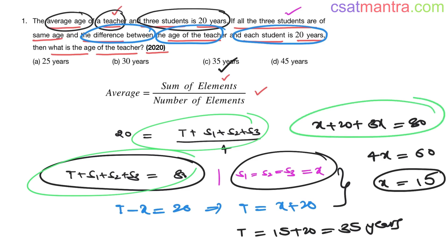You don't need to write like this. If you have practiced sufficiently, you can directly write like this. The difference is 20, so if each student is x, then sum of all the students' ages is 3x. Teacher's age would be x plus 20. You can directly write this step. From this you can find out the x value and then the teacher's age.